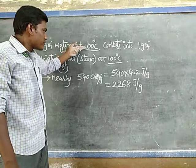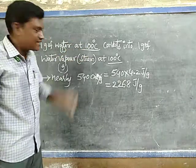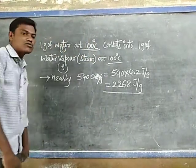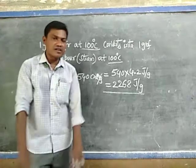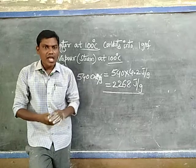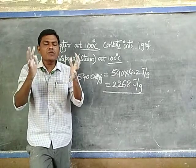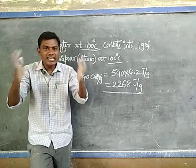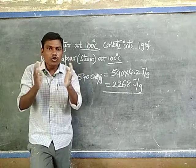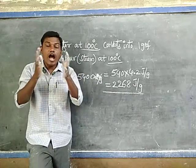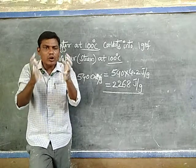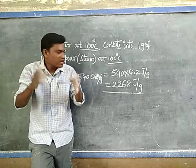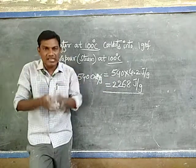How is this 2268 joules of heat energy utilized? In the concept of latent heat of melting, I said that in solid substances the intermolecular bonds are very strong, in liquids they are moderate, and in gases they are very weak. To break up the intermolecular bonds between the water molecules, this excess heat energy is utilized by the water molecules.